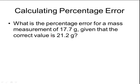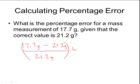What is the percentage error for a mass measurement of 17.7 grams given that the correct value is 21.2 grams? We take the experimental value of 17.7 grams, subtract the accepted value of 21.2 grams, divide by the accepted value of 21.2 grams, and multiply by 100. Plugging those numbers into a calculator gives an answer of negative 16.5 percent. The negative sign means the experimental measurement was lower than what it should have been — the actual measurement of 17.7 is lower than 21.2 by about 16.5 percent.